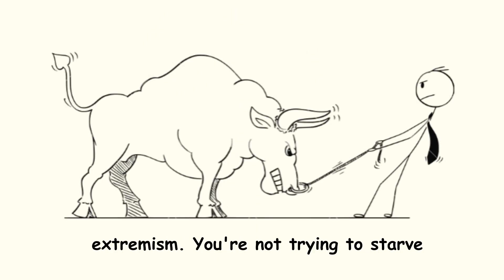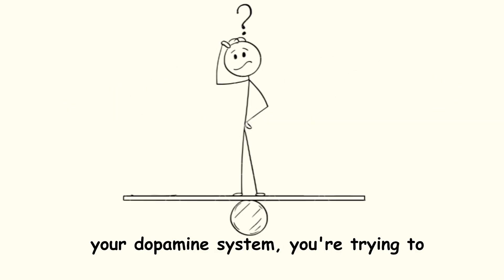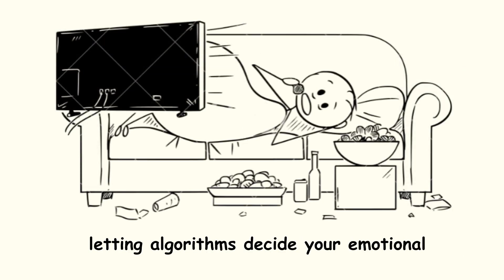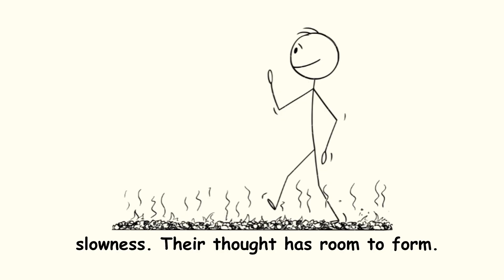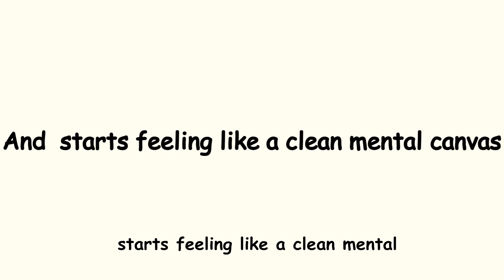The trick is consistency, not extremism. You're not trying to starve your dopamine system. You're trying to reintroduce nuance to it. Instead of letting algorithms decide your emotional tempo, you create pockets of intentional slowness where thought has room to form. Silence stops feeling threatening and starts feeling like a clean mental canvas.